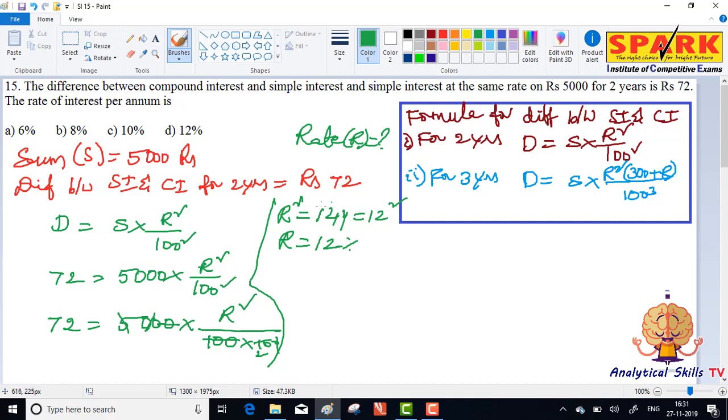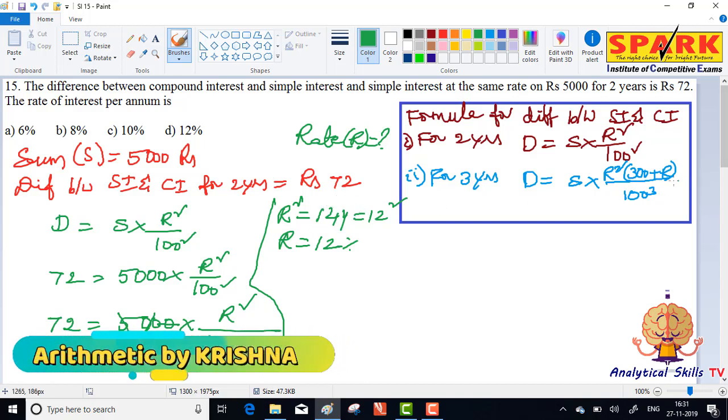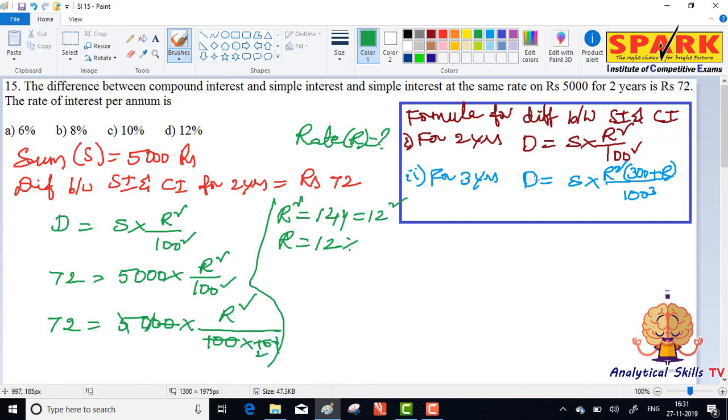Okay. Using the formula difference equal to sum into r square by 100 square, we solved this. This is the difference between simple interest and compound interest for 2 years. For this sum, applying the formula directly is the better option for competitive exams. No confusion, and you can solve it with speed. Okay, try this. All the best. Thank you very much.